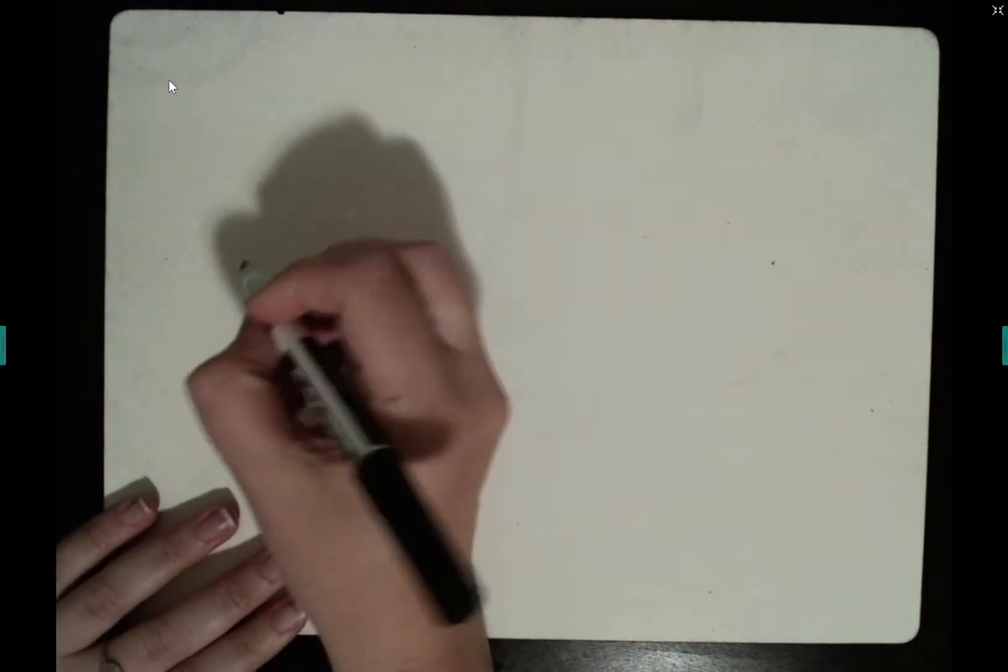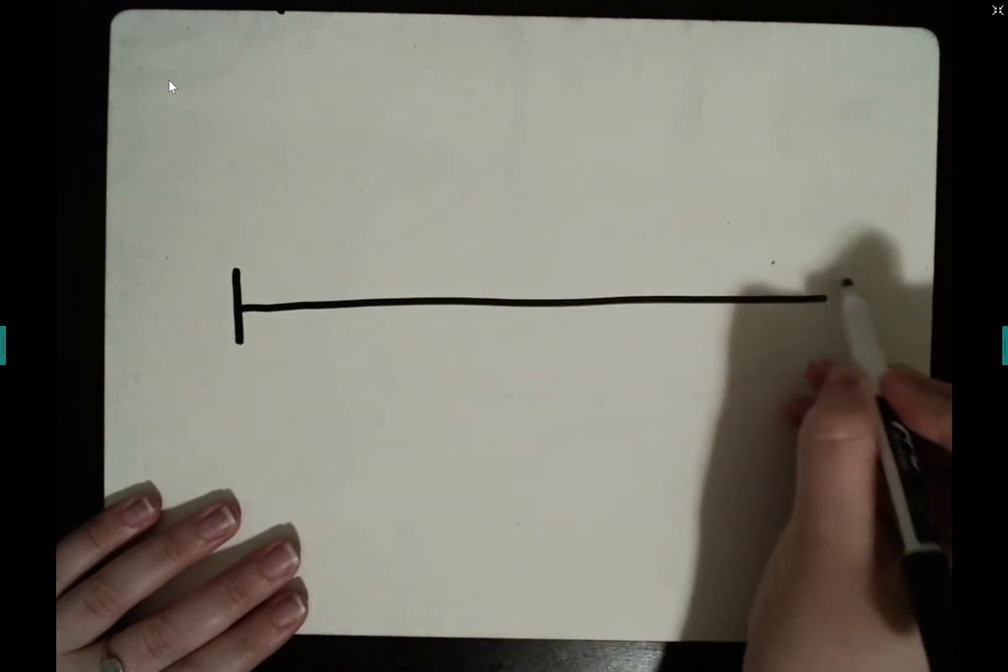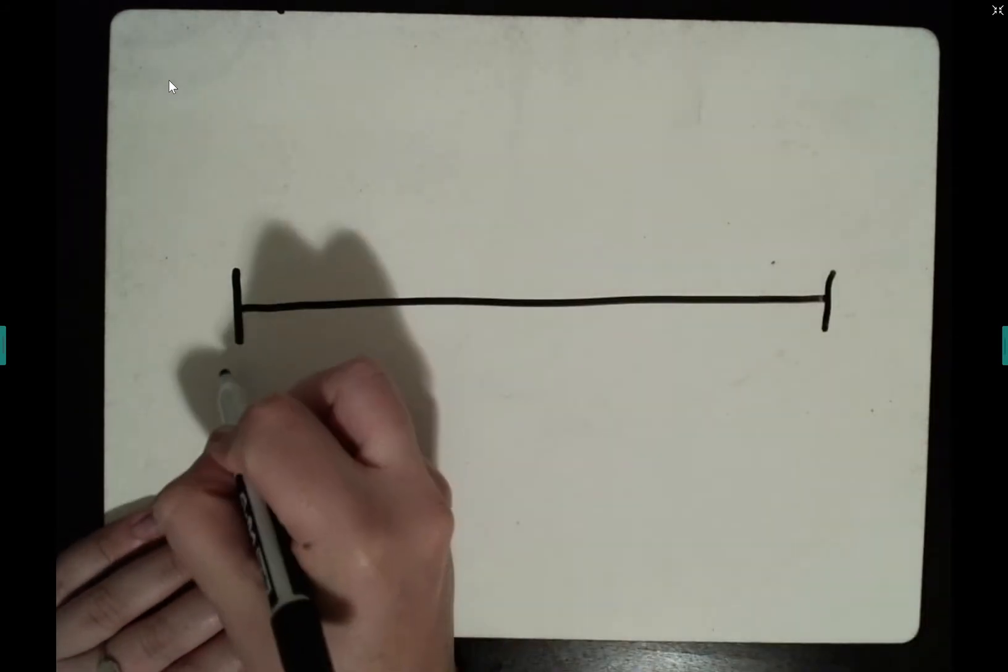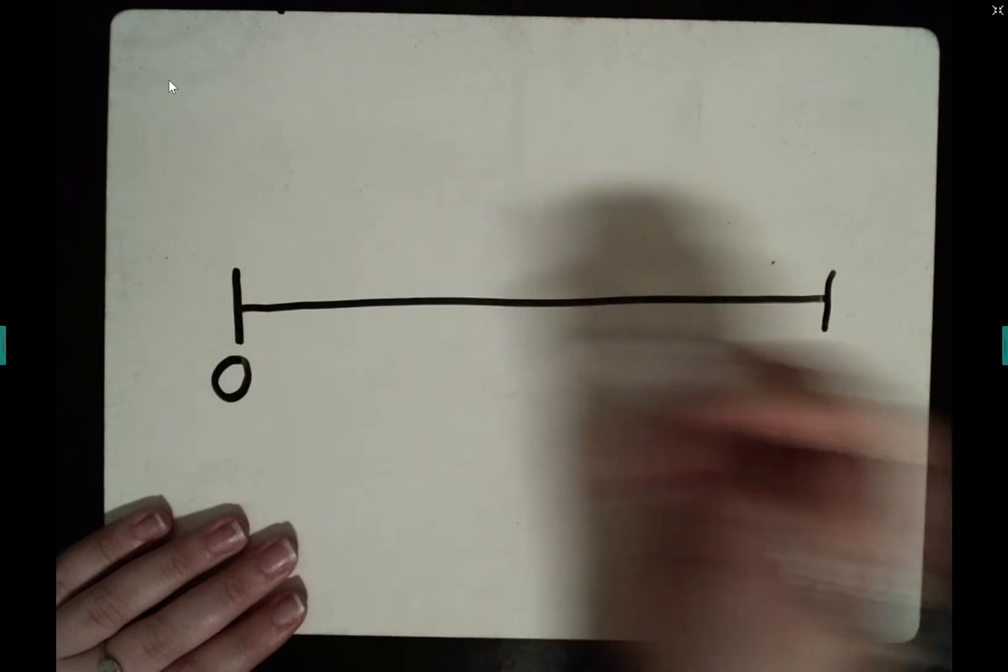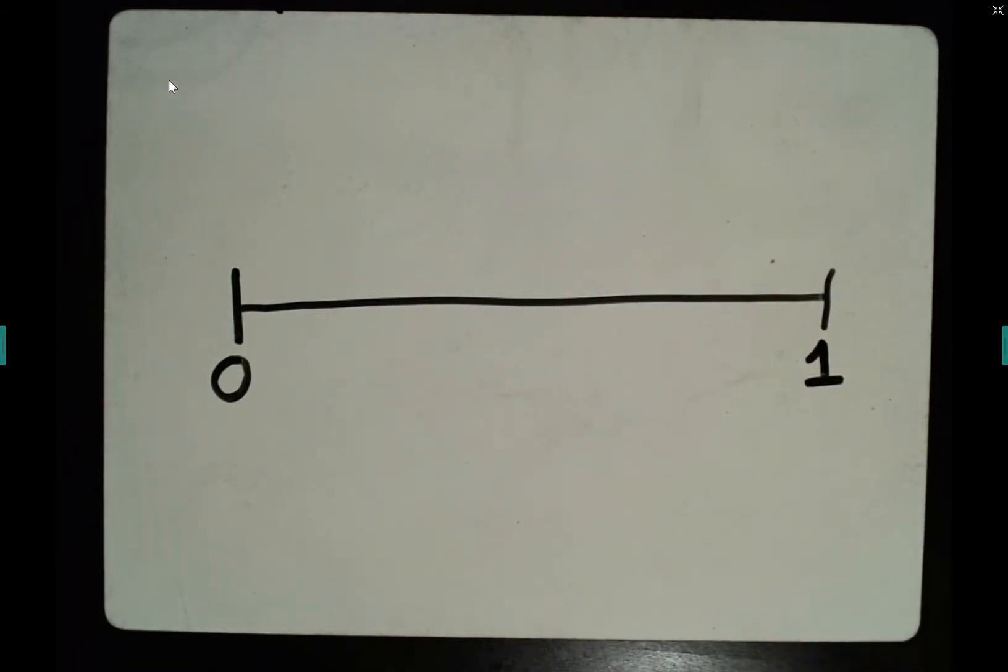Today we're going to talk about the length model. So in a length model, we're going to have something that looks kind of like a number line. Right here is going to be zero and this is going to be one whole. The one is for one whole.